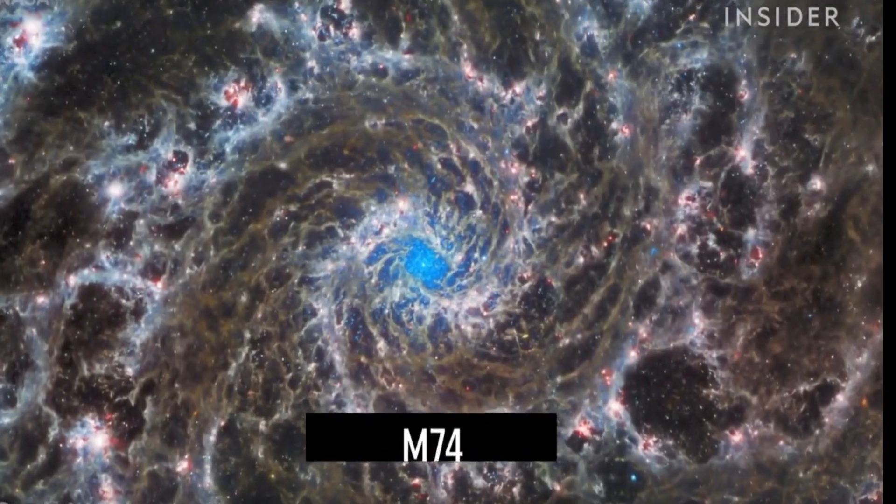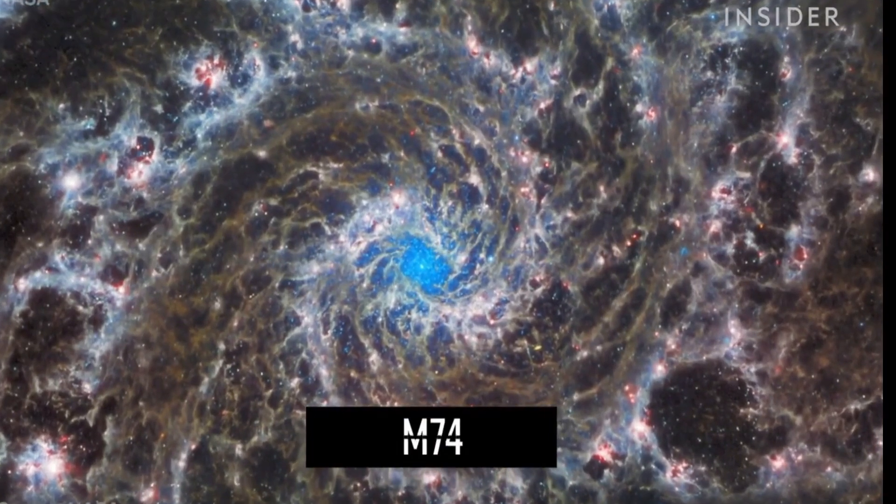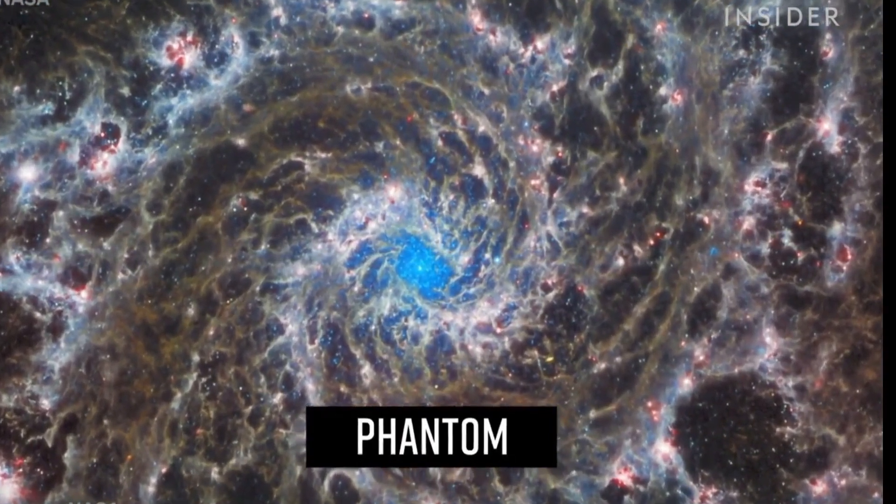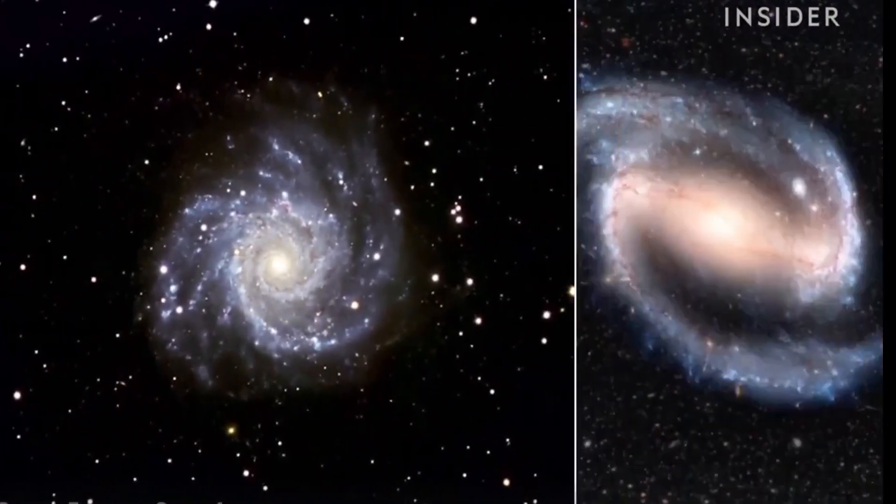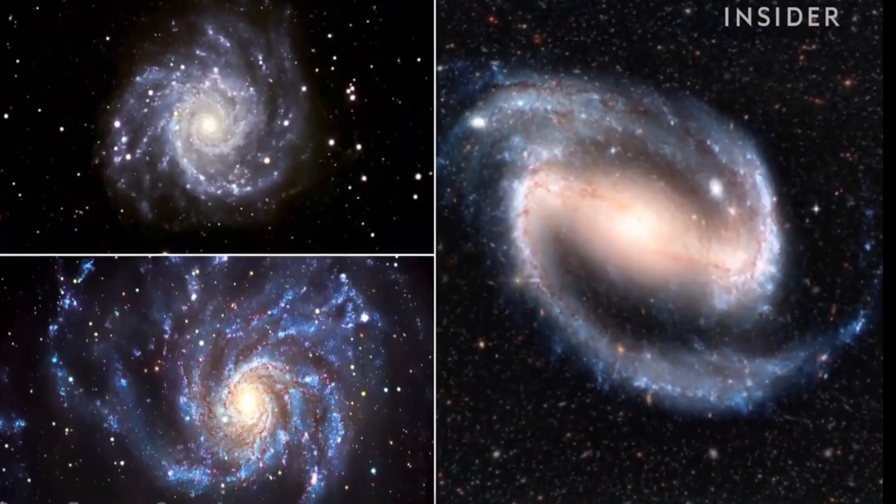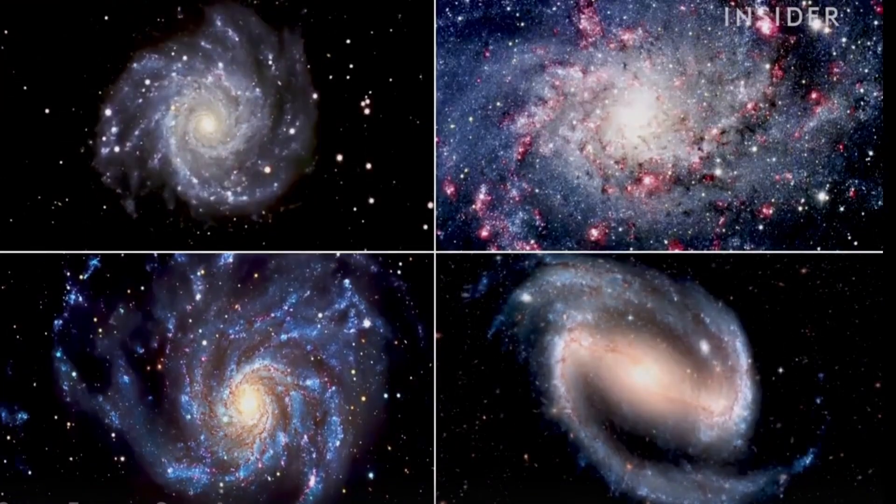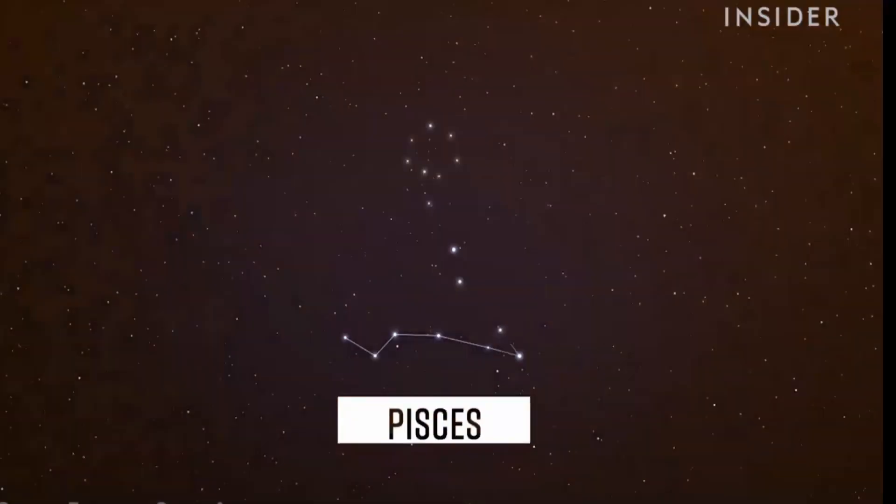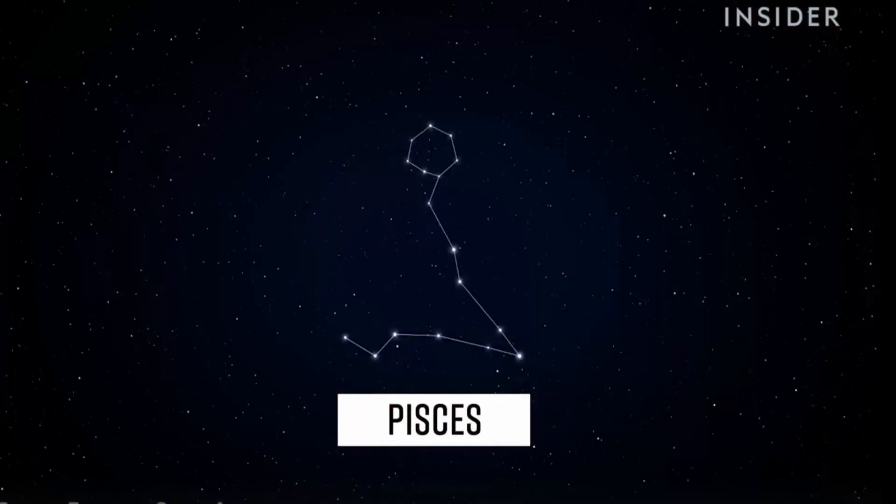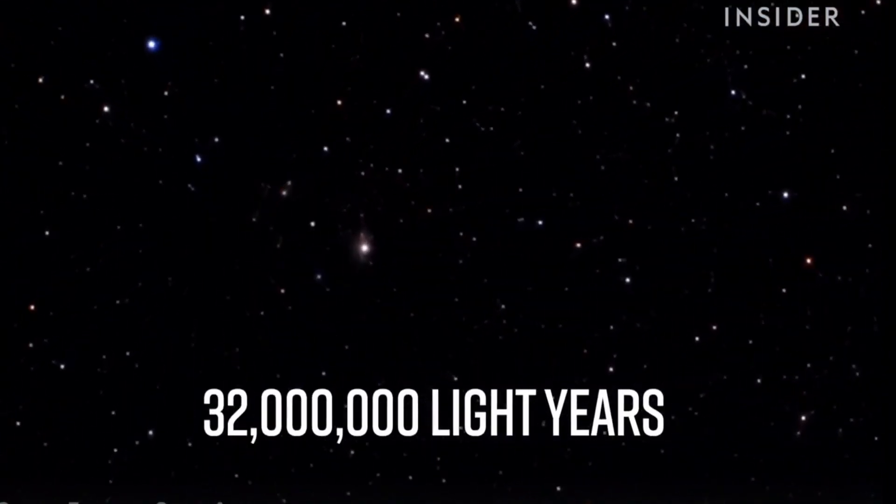This image shows the heart of M74, also known as the phantom galaxy. Its spirals are so well defined that scientists often study it to understand why some galaxies are shaped this way. This one sits in the constellation Pisces, almost face to face with Earth, but 32 million light years away.